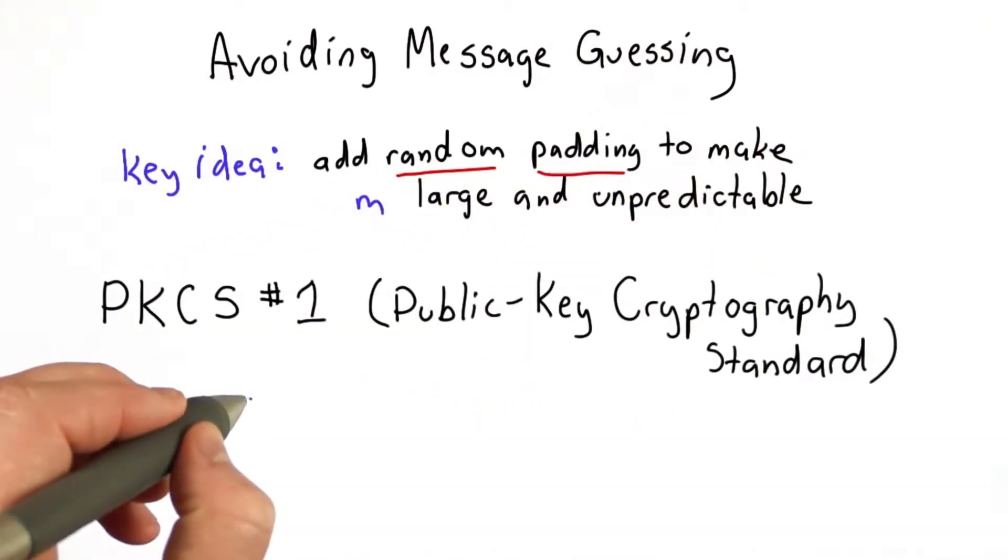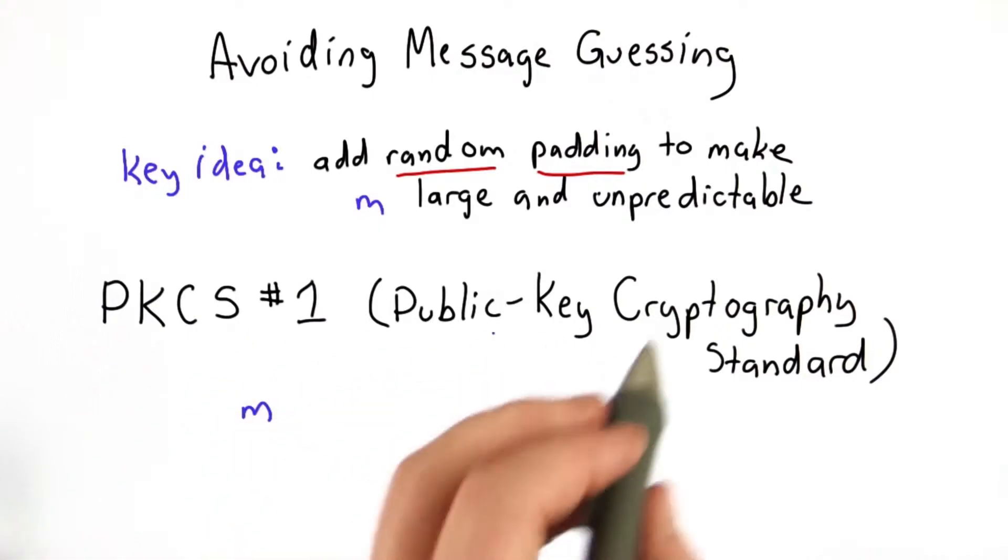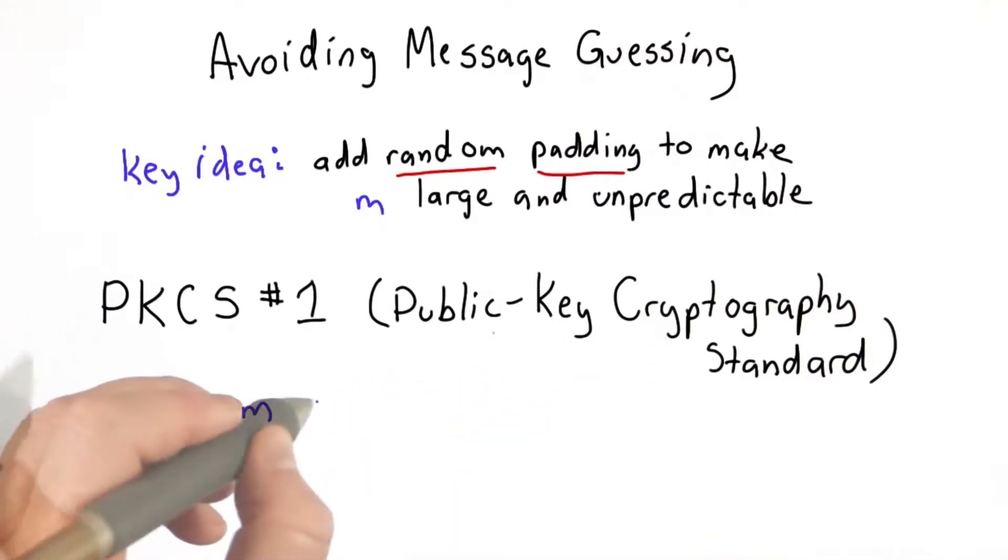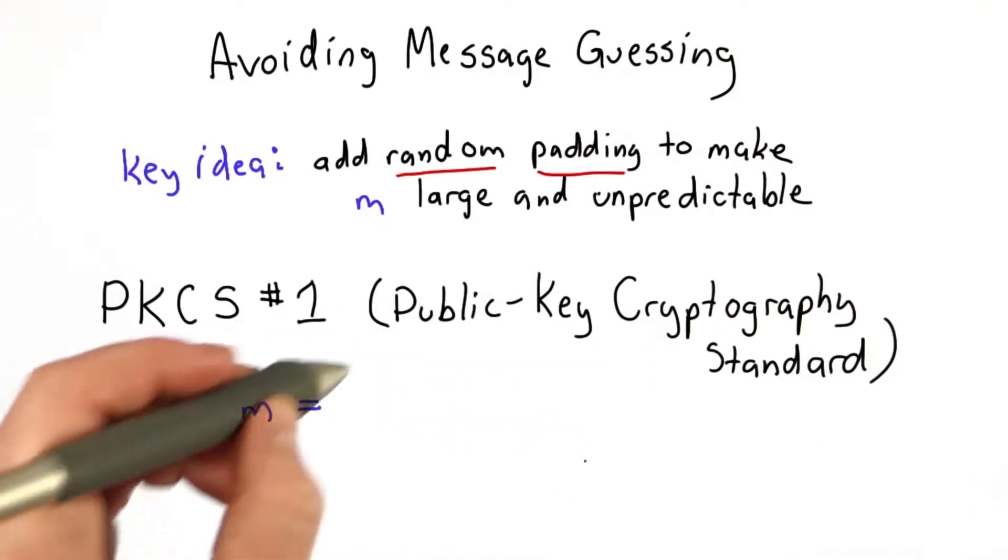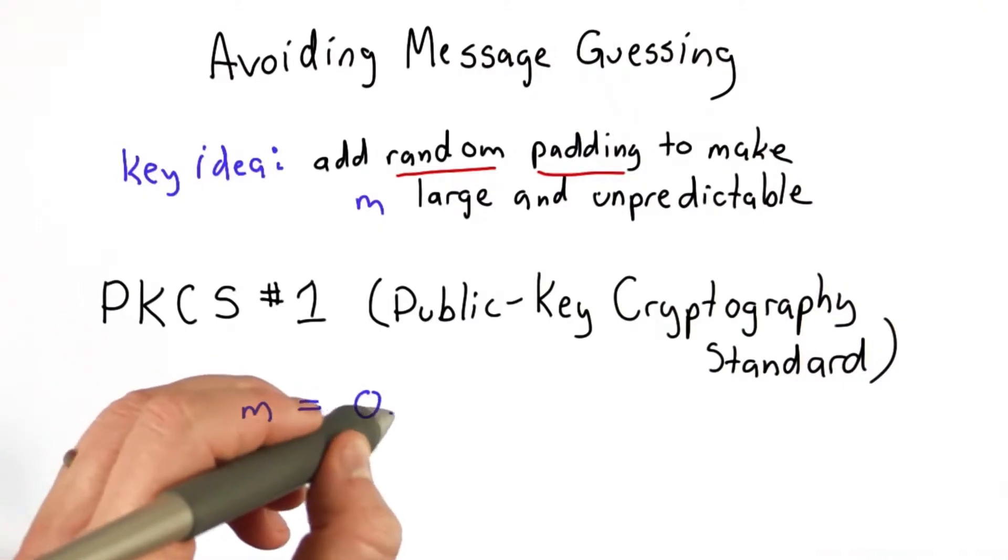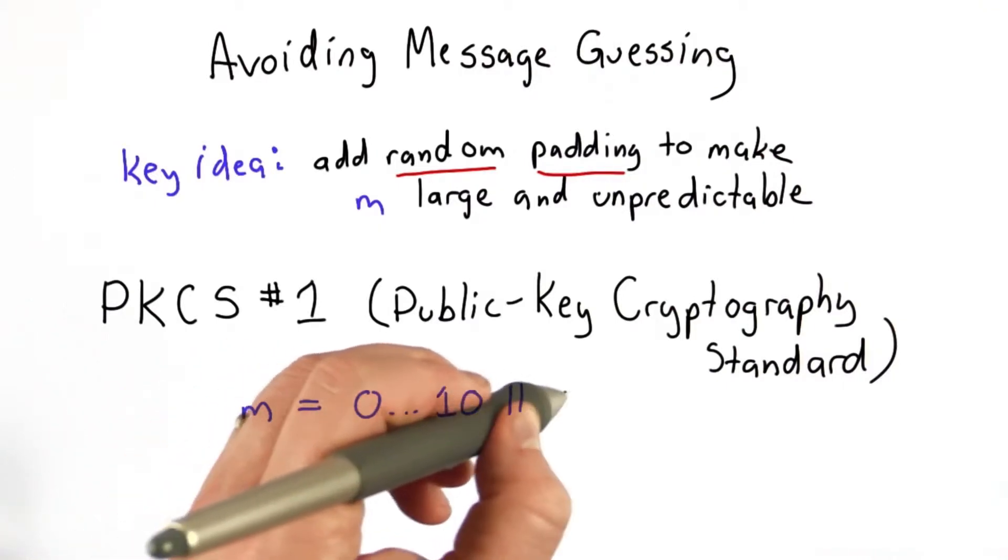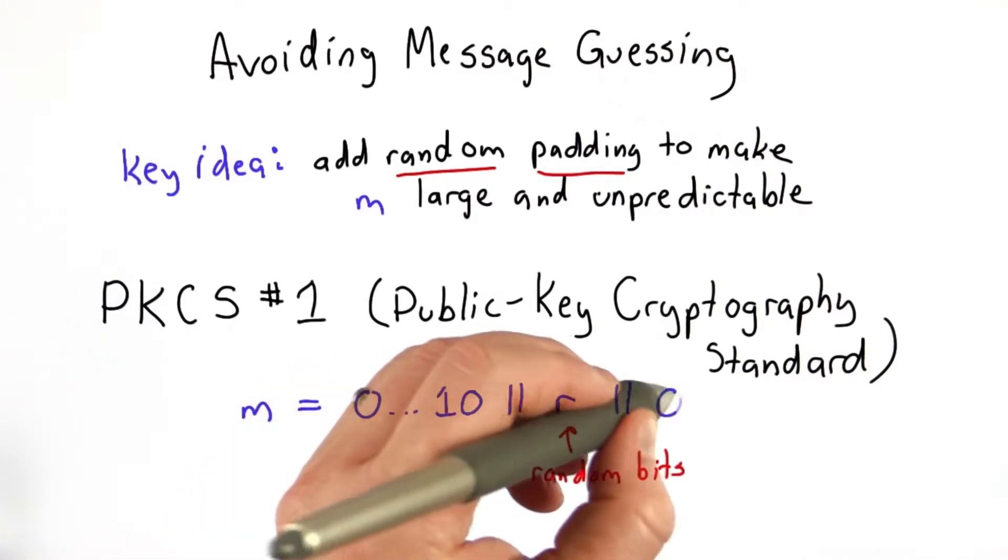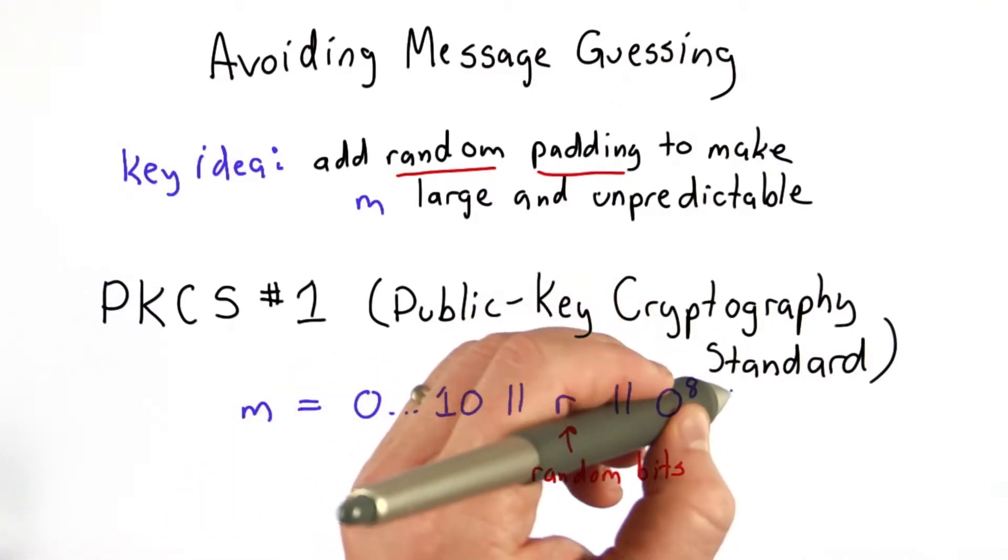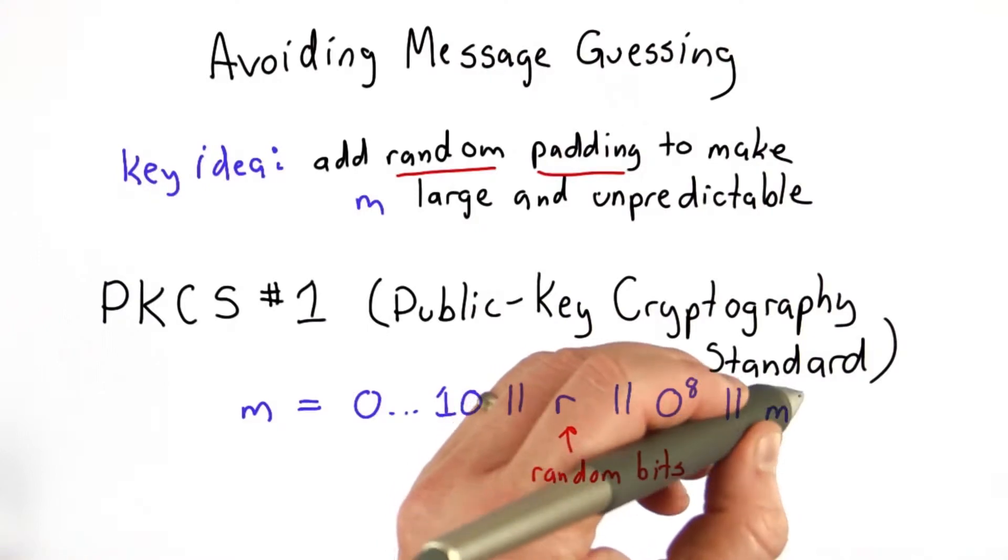There are lots of different ways to do this. One is the public key cryptography standard number 1, which is to replace the original message with 0 padding followed by a 10, followed by some random bits, followed by a byte of 0s, followed by the original message.